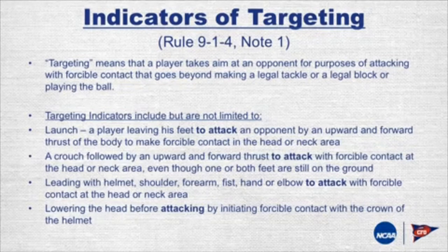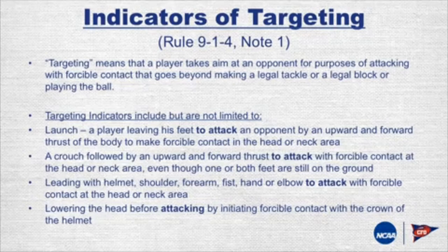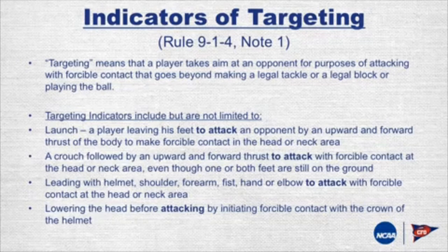Targeting indicators are listed but they're not limited to only these. Clearly a launch is one. A second is a crouch followed by an upward and forward thrust to attack. Notice the word 'attack' appears in each of these: leading with the helmet, shoulder, forearm, fist, hand, or elbow to attack with forcible contact. And simply lowering the head before attacking by initiating forcible contact with the crown of the helmet — those are all indicators.